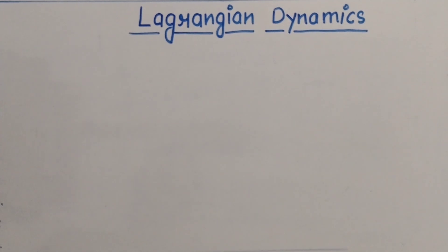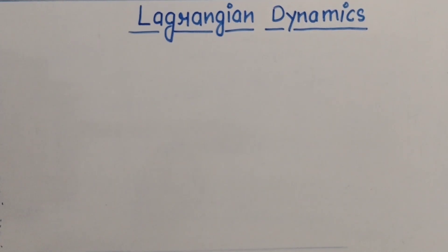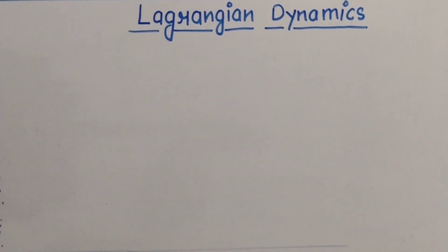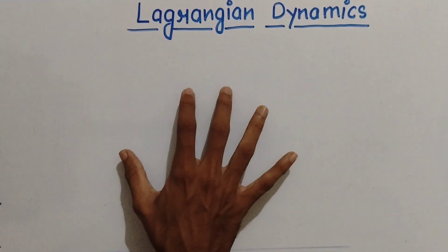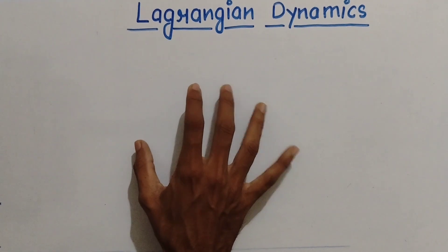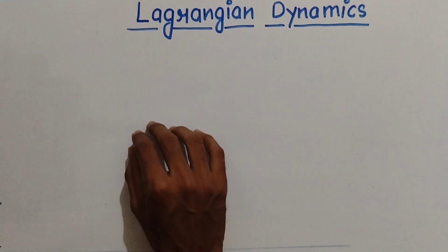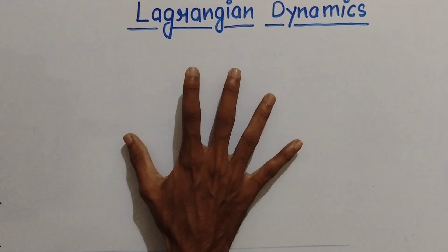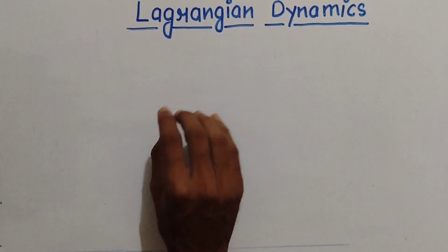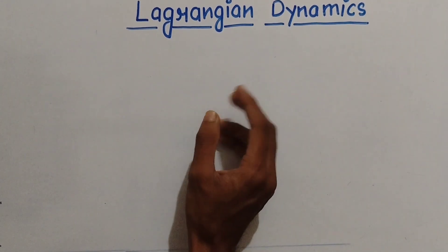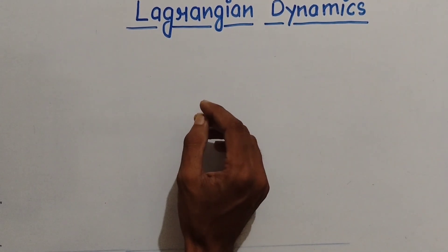Hello students, welcome to our YouTube channel Science World once again. In this video the topic is related to classical mechanics. We will discuss about Lagrangian dynamics and later on we will discuss about Hamiltonian and its canonical equation of motion. We will also discuss the equation of motion for Lagrangian dynamics and do some problems related to Lagrangian — questions that come into your exams like IIT JAM and CSIR NET.